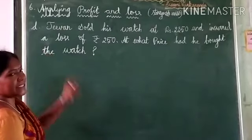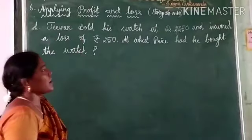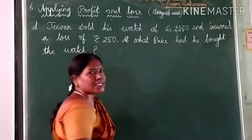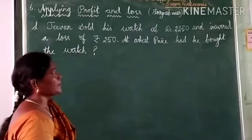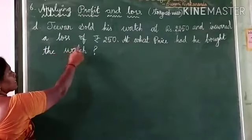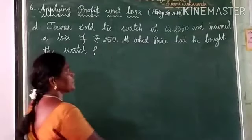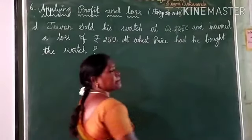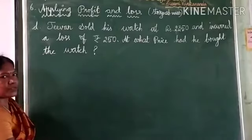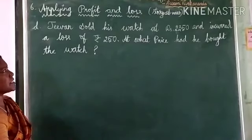Submission D. Jeevan sold his watch at rupees 2350 and he incurred a loss of rupees 250. At what price did he buy the watch?